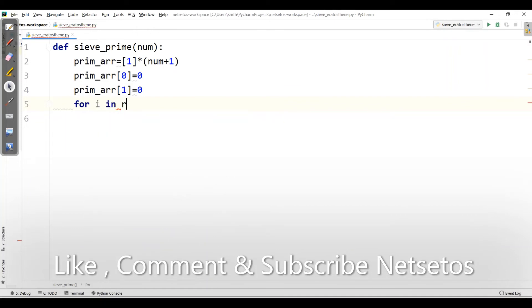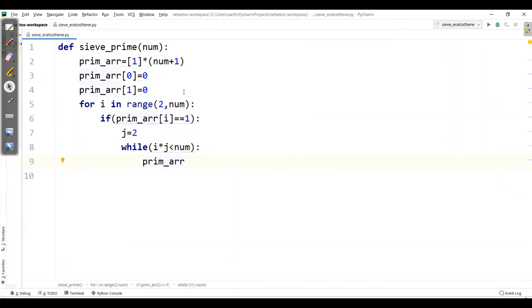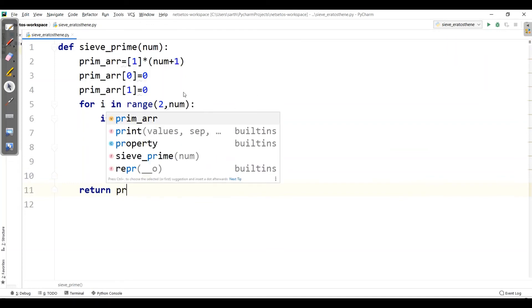For i in range from 2 to num. Then the next step, we will check for each array sequentially whether prime array of i is equal to 1 or not. If it is 1, then we will go for j equals 2. Then we will do the process: i into j, and we will compare with our num. So if i into j is smaller than num, then prim array of j into i will be made 0, so that all multiples of prime numbers will be 0. Then we increment j value by 1. Return prim_ar which we have made.